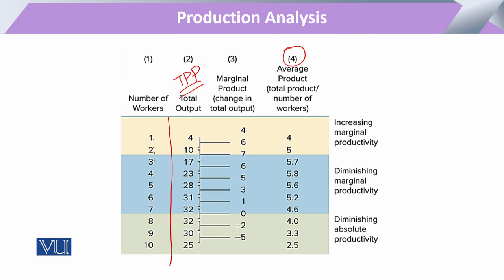Average Product is the term we use when we say a firm is productive or has higher productivity. It is calculated as Total Product (column 2) divided by the number of inputs (column 1). So here, 4 divided by 1, or 10 divided by 2 — this gives us the average product for that entrepreneur or firm. Average product is the term that basically shows the productivity of a firm.